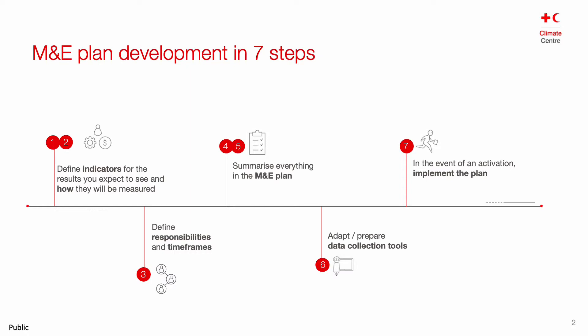The preparation of monitoring and evaluation for anticipatory action unfolds in seven simple steps as described in the manual, which can be summarized as follows. First, we define indicators for the results we expect to see and how they will be measured. Then we define responsibilities and time frames for who will collect and analyze data on these indicators and when. We summarize everything in an M&E plan and prepare data collection tools so that we are ready in the event of an activation.